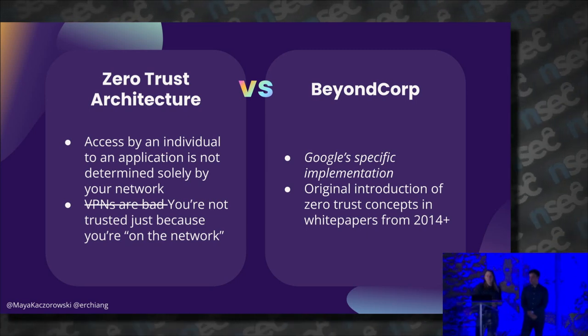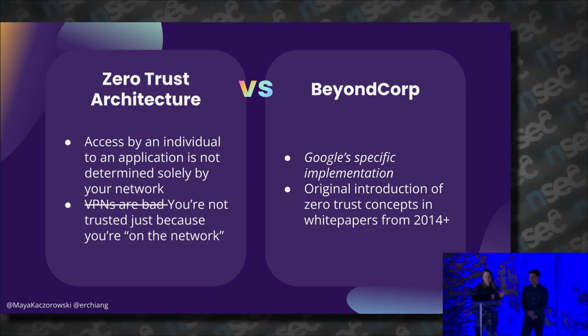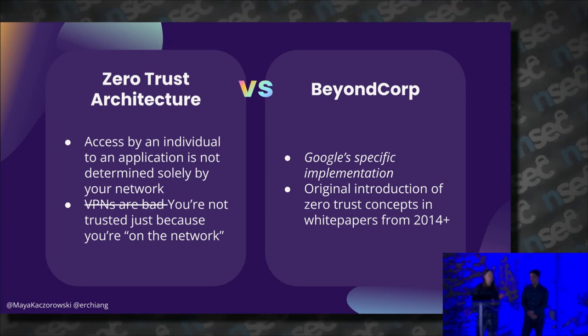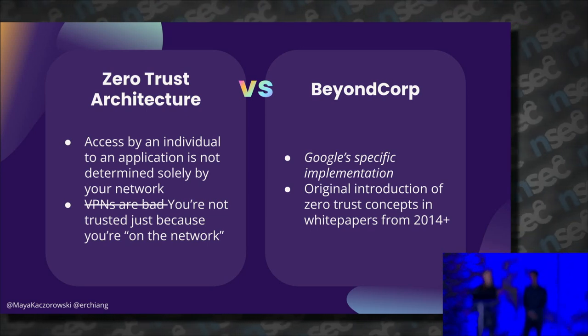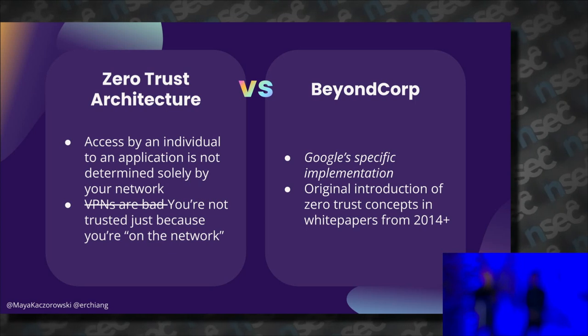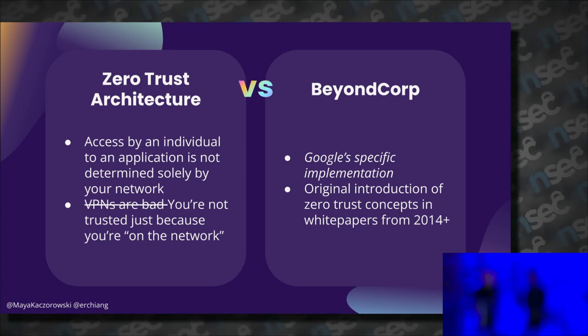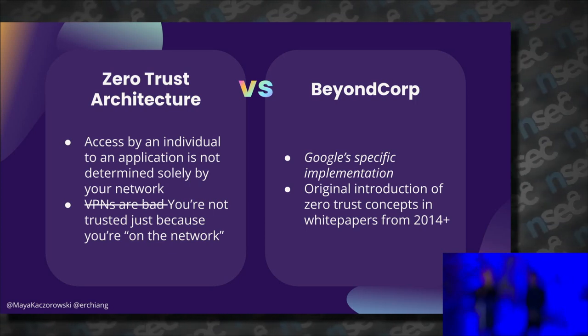It's more that VPNs with no application-level access controls are bad. BeyondCorp, introduced in a paper in 2014, is Google's specific implementation from which the broader zero trust principles and zero trust architecture emerge.